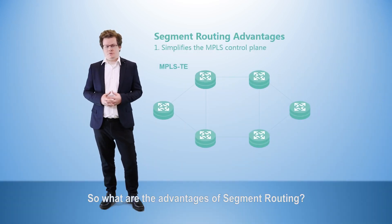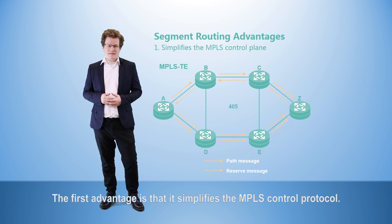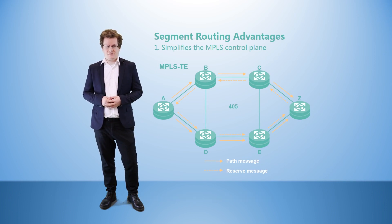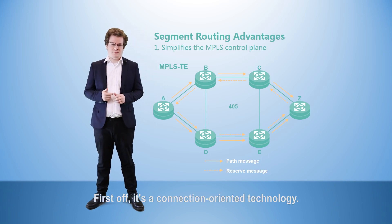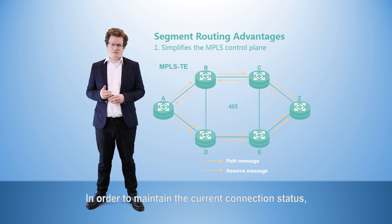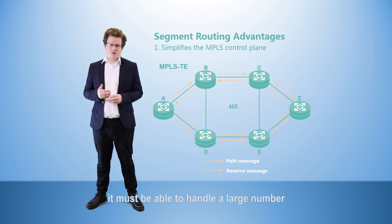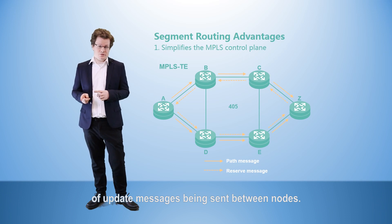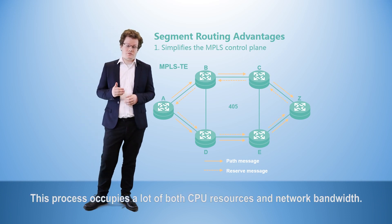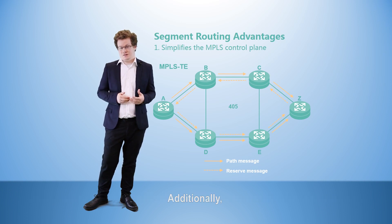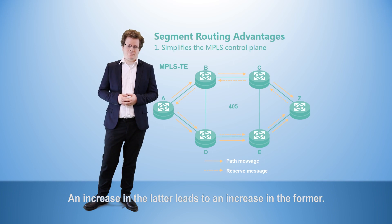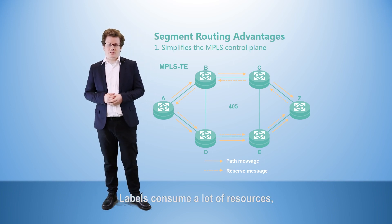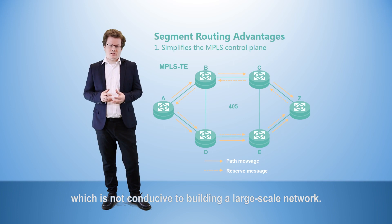So what are the advantages of segment routing? The first advantage is that it simplifies the MPLS control protocol. Let's take a quick look at MPLS TE. First off, it's a connection-oriented technology. In order to maintain the current connection status, it must be able to handle a large number of update messages being sent between nodes. This process occupies a lot of CPU resources and network bandwidth. Additionally, the number of MPLS labels varies according to the number of LSPs — an increase in the latter leads to an increase in the former. Labels consume a lot of resources, which is not conducive to building a large-scale network.